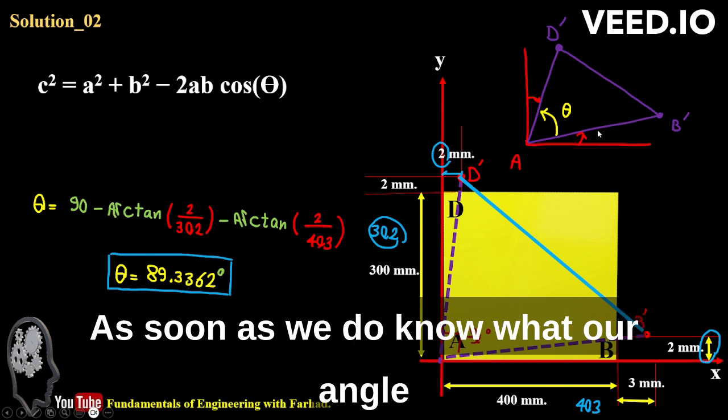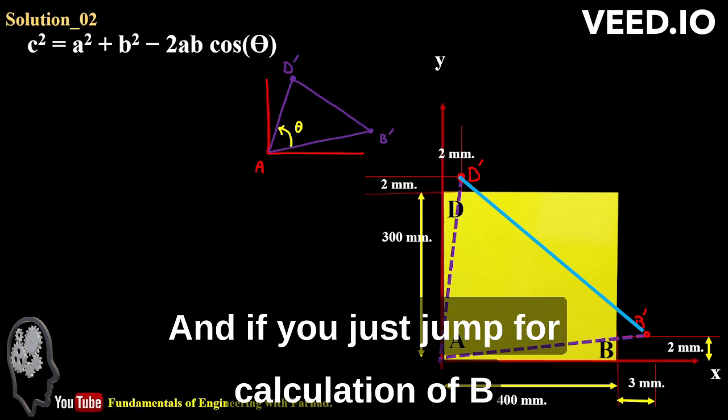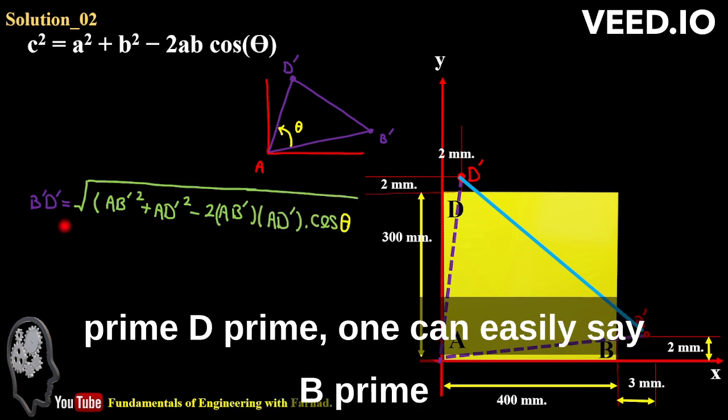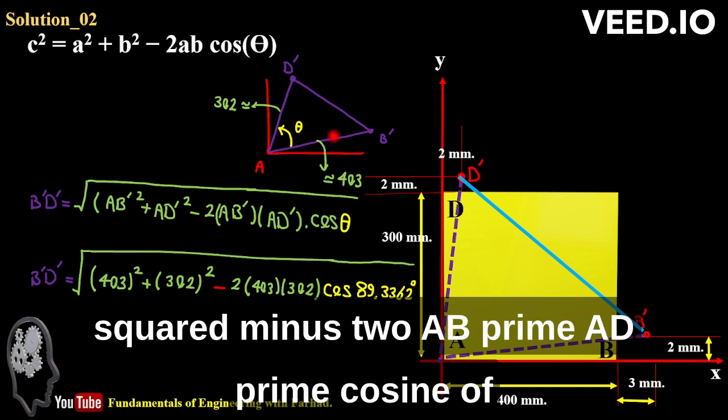As soon as we know what our angle is, we know what the dimensions are. And if you jump to calculation of b prime d prime, one can easily say b prime d prime is a b prime squared plus a d prime squared minus 2 a b prime a d prime cosine of theta, which we already calculated.